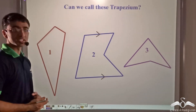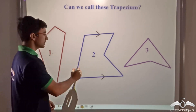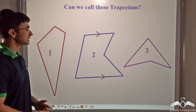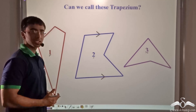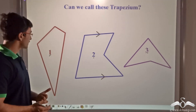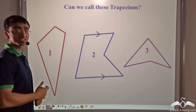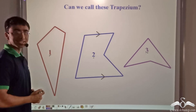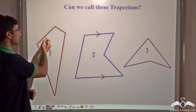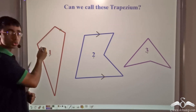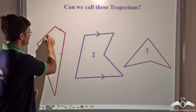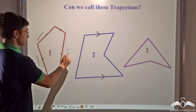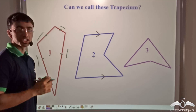Consider three figures. Figure 1 is not a trapezium because there are no parallel sides — neither pair of sides is parallel, so despite being a quadrilateral with four sides, it does not qualify as a trapezium.